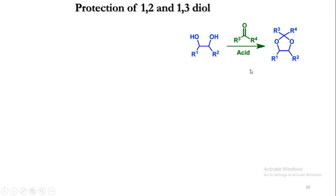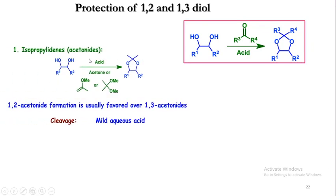In this reaction, the OH group is nucleophilic in nature, therefore it can easily attack on the carbonyl carbon. As the OH attacks on the carbonyl carbon, the H₂O is removed, therefore the protection is generally carried out under acidic conditions. The OH is nucleophilic, so it attacks over the carbonyl carbon, the water molecule is removed, and the cyclic acetal is easily formed.